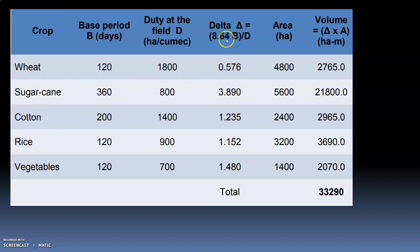For sugarcane: delta = 8.64 × 360 ÷ 800 = 3.890. Volume = delta × area = 3.890 × 5,600 = 21,800. For cotton: delta = 1.235, area = 2,400, volume = 2,965. Rice gives volume 3,690 and vegetables gives 2,070.